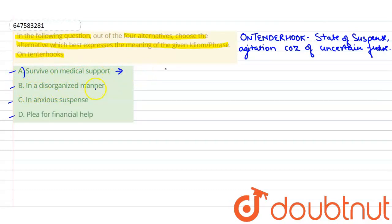Second is, in a disorganized manner. Here we are talking about a manner, a haphazard manner. There is no proper way. That is called in a disorganized manner.